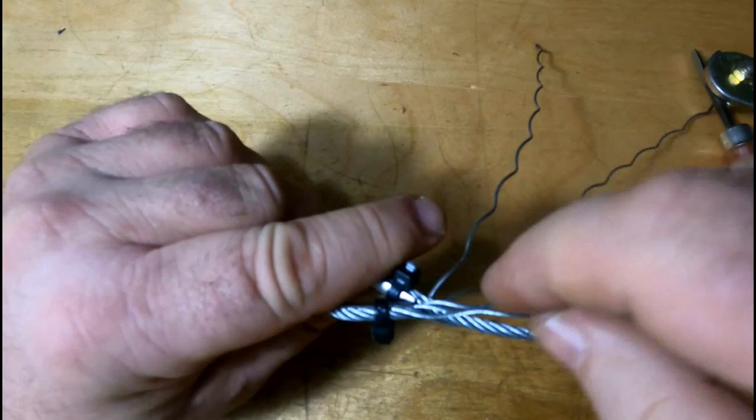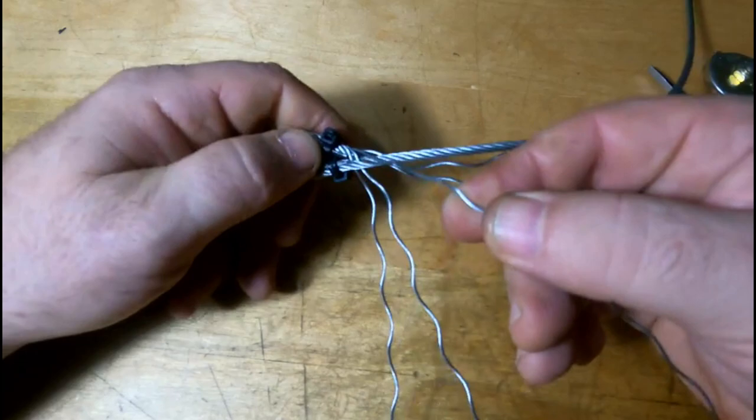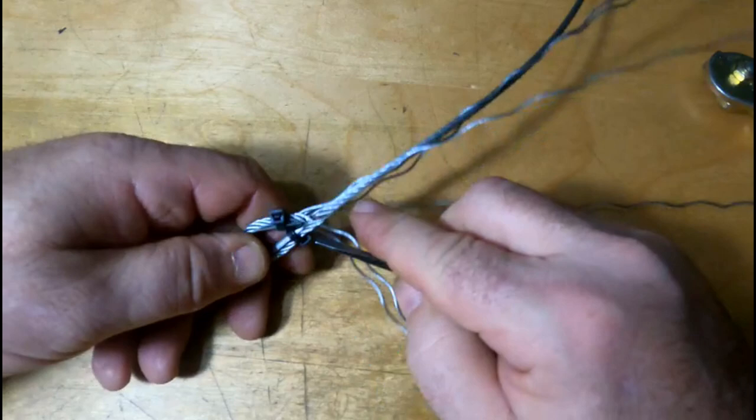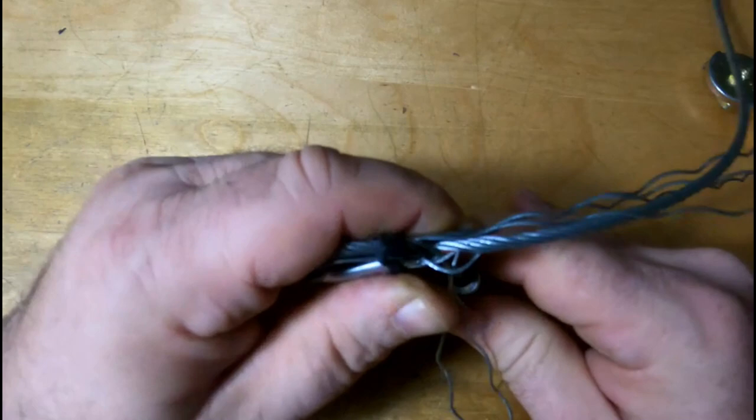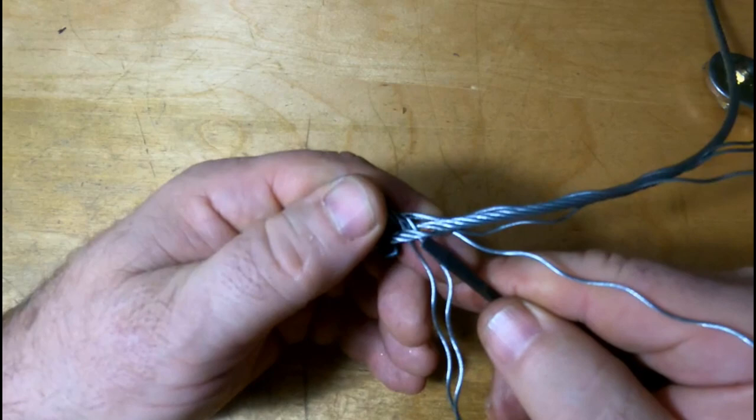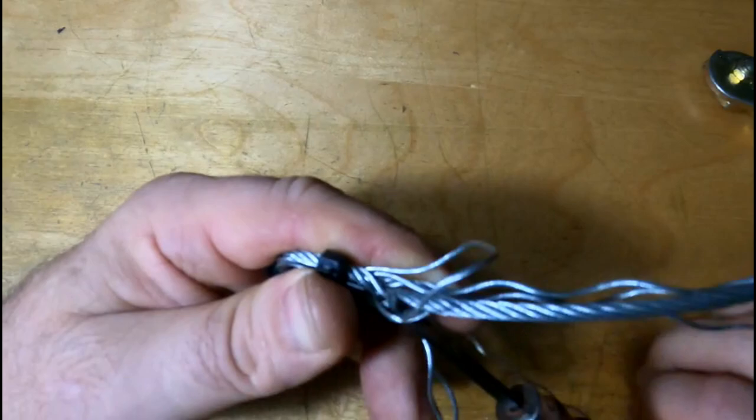Now we've got our number three strand, which it can get confusing. So you've got to see, there it is right there, that's number three. And on this one, there's only one strand that it goes under. So I'll put that in, rotate it, and slide our number three strand through there.